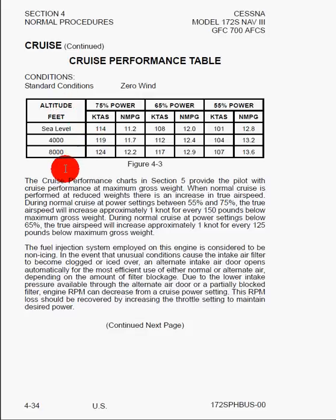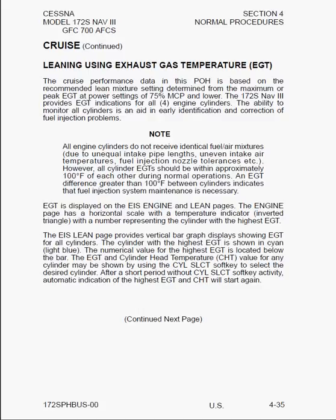Here we can see leaning for the exhaust gas temperature. In an older Cessna, you'd have an exhaust gas temperature gauge. In the newer G1000, it will actually show you the temperatures of each of the individual cylinders, as well as the RPM, exhaust gas temperature, and a whole host of information — much more robust and easier to use for leaning the engine more properly.